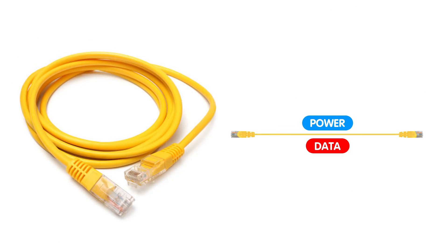Power over Ethernet is a technology that allows electrical power and data to be transmitted simultaneously over a single Ethernet cable. In a standard network setup, devices such as IP cameras, access points, and other network devices require both a data connection and a separate power source. PoE eliminates the need for additional power cables by delivering electrical power alongside data signals through the Ethernet cable.